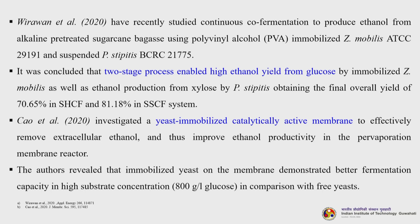Kau et al. investigated a yeast-immobilized catalytically active membrane to effectively remove extracellular ethanol and thus improve ethanol productivity in a pervaporation membrane reactor. The authors revealed that immobilized yeast on the membrane demonstrated better fermentation capacity at high substrate concentrations — almost 800 grams per liter of glucose — in comparison with free yeasts.